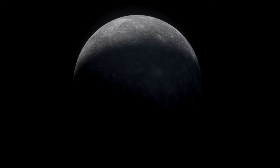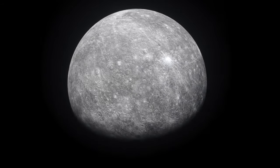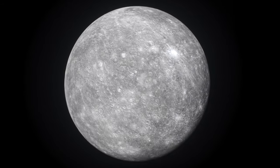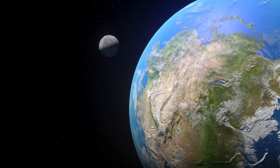The lunar cycle, that's the time the Moon, or rather Mercury now, needs to go through all the phases, would become 14 hours shorter. But all in all, such a replacement wouldn't have any drastic consequences for our planet.